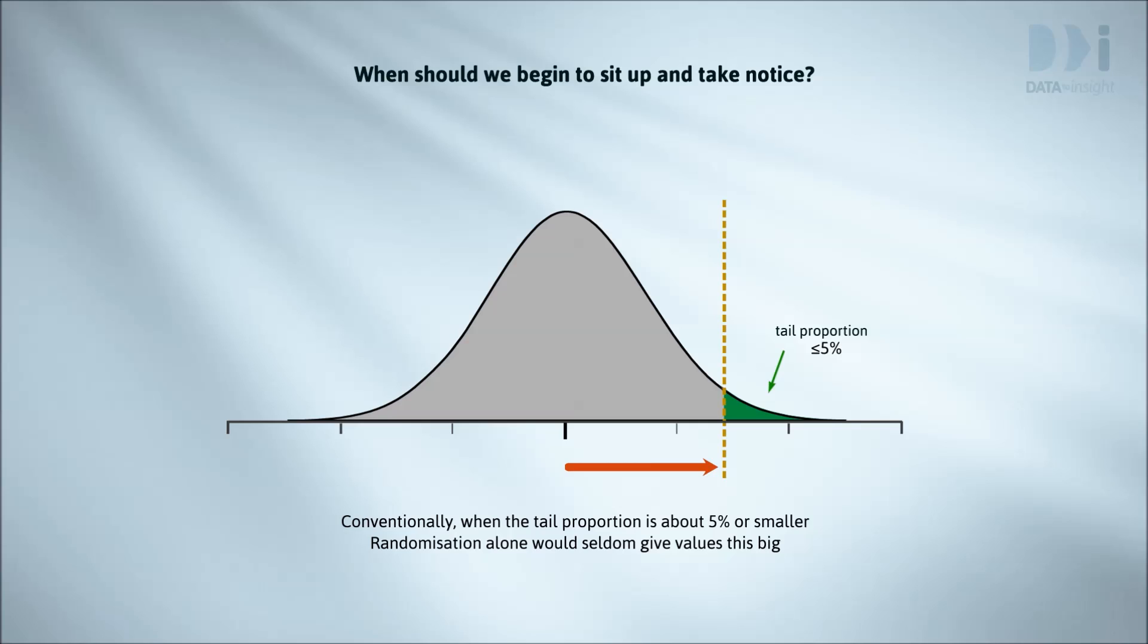There are a number of important subtleties about interpreting tail proportions. Formally, they're called p-values. There are also some really bad consequences of a rigid application of the 5% cut-off as a gold standard for having proved something. We'll address these in articles to follow.